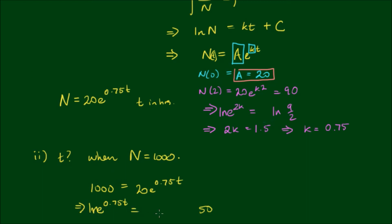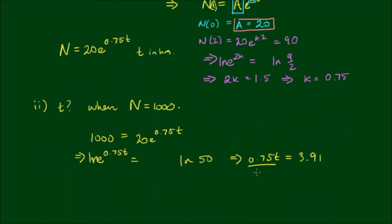We take the natural log of both sides, which means that 0.75t equals about 3.91. And finally dividing both sides by 0.75, we get t equals about 5.2 hours, or about 5 hours and 12 minutes.